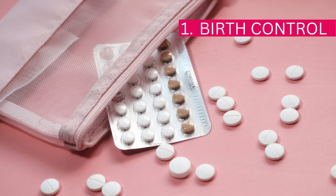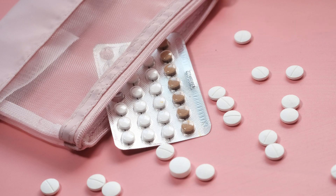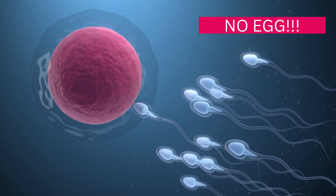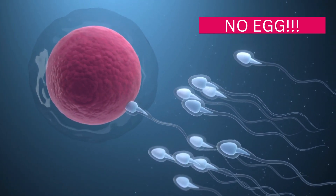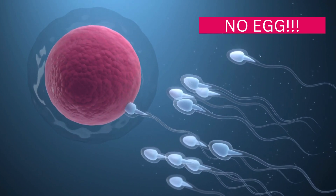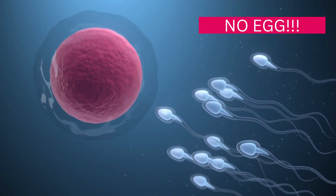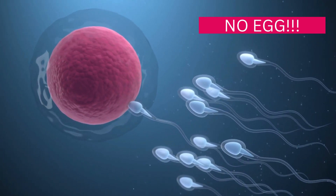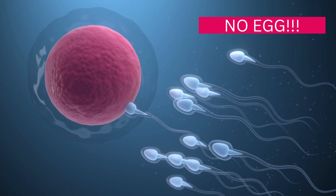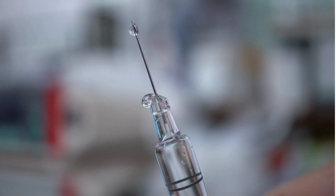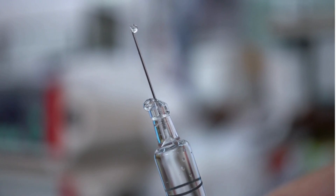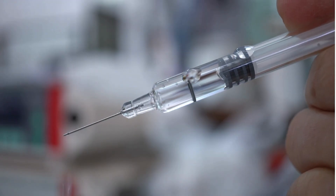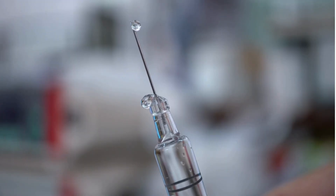Number one: birth control. Most birth control options stop ovulation in order to prevent pregnancy — if there's no egg for the sperm to fertilize, there will be no pregnancy. There are many women who have no idea how their birth control works because they weren't well informed. On the other hand, some have lasting effects, meaning even after you go off it, it takes a while for your natural hormones to kick in and for ovulation to start again.